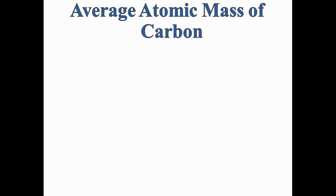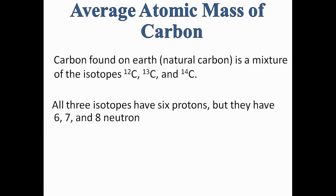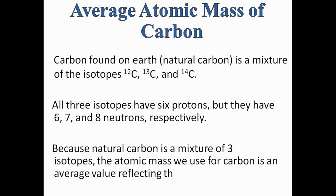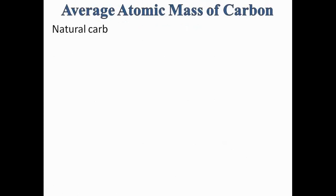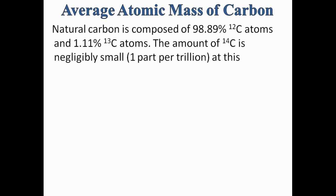Natural carbon is a mixture of isotopes: C12, C13, and C14. All three isotopes have six protons but six, seven, and eight neutrons respectively. Because natural carbon is a mixture of three isotopes, the atomic mass used for carbon is an average value reflecting the average mass of its isotopes. Natural carbon is composed of 98.89% C12 atoms and 1.11% C13 atoms. The amount of C14 is negligibly small — one part per trillion — at this level of precision.